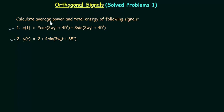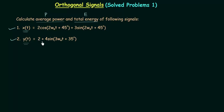We need to calculate the average power P and total energy E of the following signals. The first signal is x(t) = 2cos(2ω₀t + 45°) + 3sin(2ω₀t + 45°), and the second signal is y(t) = 2 + 4sin(3ω₀t + 35°).